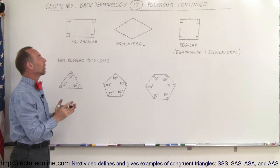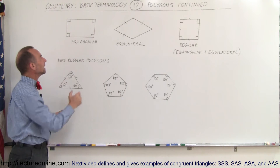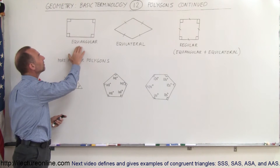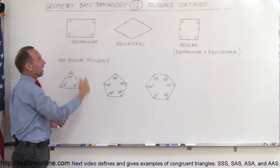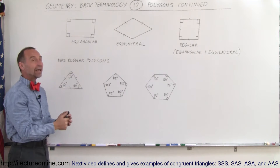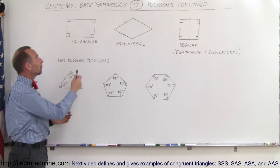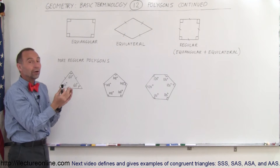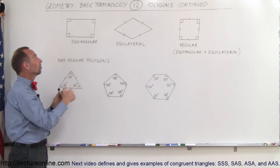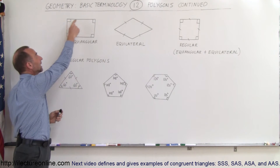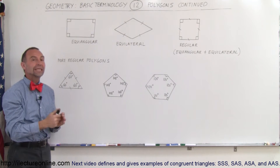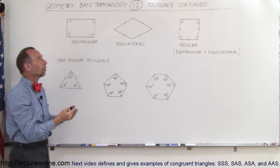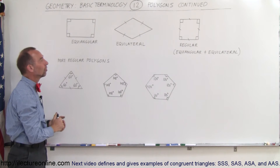What are those types of polygons? Equiangular means that all the angles are the same — equi means the same and angular means angles. Here we have a rectangle, it could be a square, but in all cases you can see that the angles are all the same, so we call them equiangular polygons.